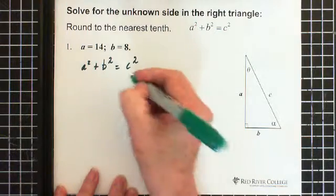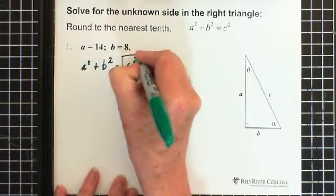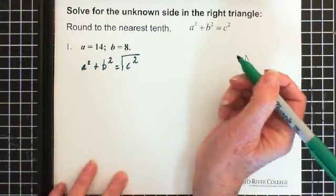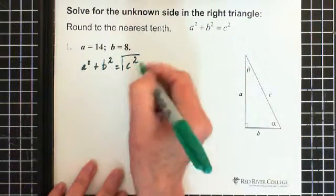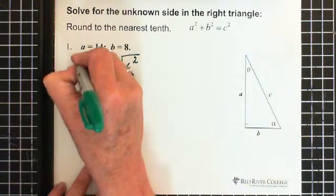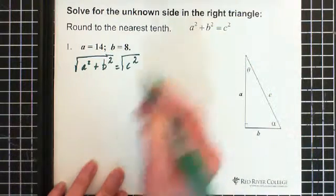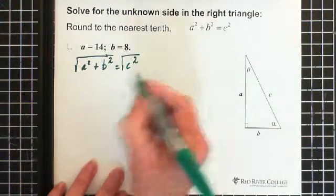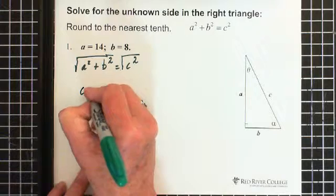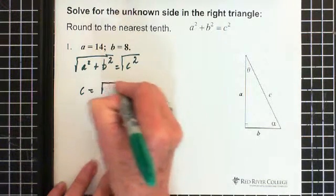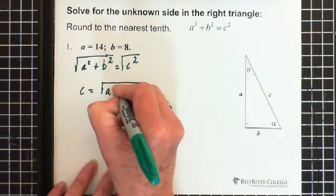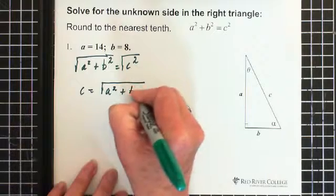We're solving for c, so we square root c², and we'll end up with c. But if we square root c², we have to square root the other side of the equation. Square root of c² is c. So c equals the square root of a² plus b².